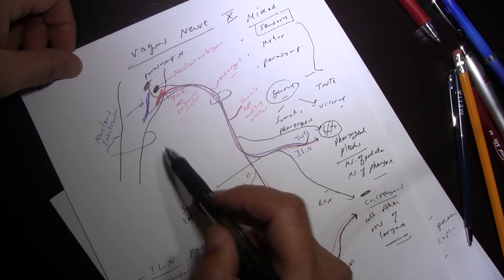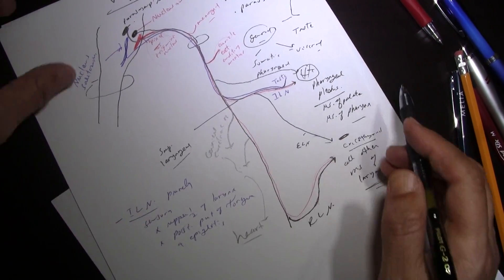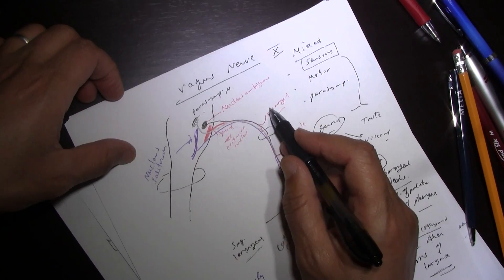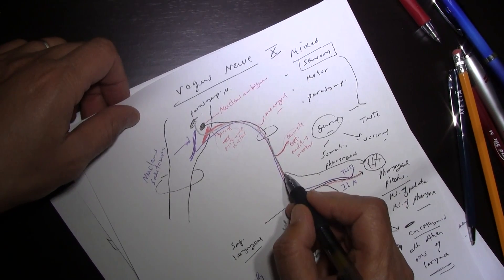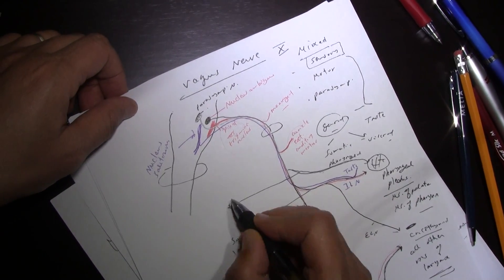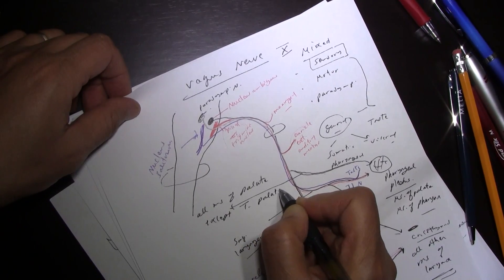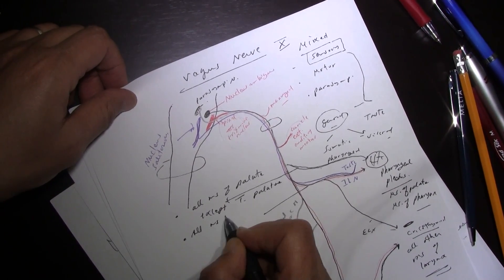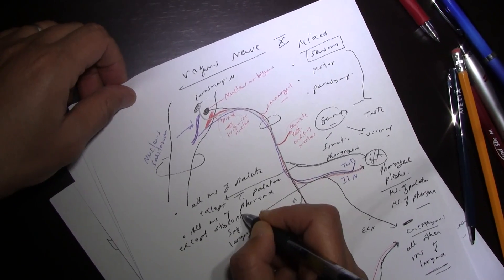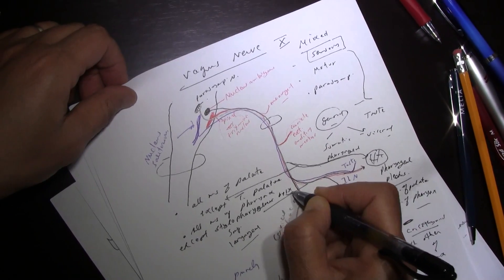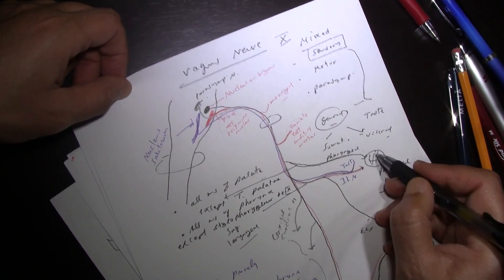So the vagus nerve gives multiple branches in the neck. The first branch is the meningeal branch to the meningeal covering of the brain in the posterior cranial fossa. Then the auricular branch to the external auditory meatus. Then the pharyngeal branch, which is motor and supplies all muscles of the palate — except tensor veli palatini, which is supplied by V3 — and all muscles of the pharynx.